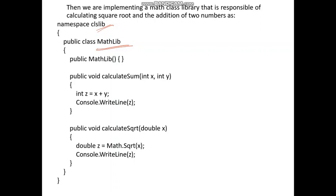Then create a class called MathLib, which is responsible for calculating the square root and the addition of two numbers. Under MathLib, a constructor is created — the constructor has the same name as the class and is a specialized function for the class. We are then creating two functions: the first is 'CalculateSum', which takes two arguments, int x and int y, calculates their sum in z, and prints it to the console using Console.WriteLine.